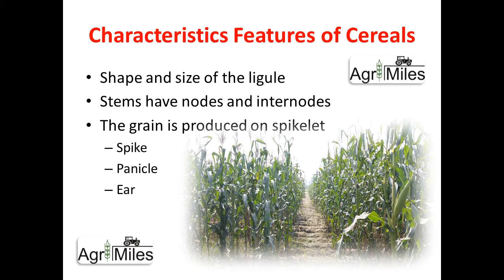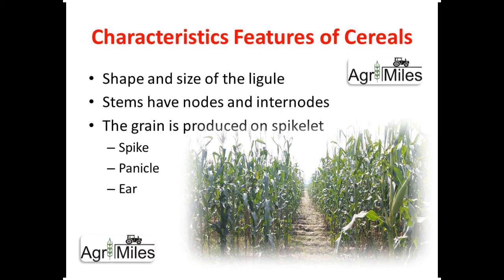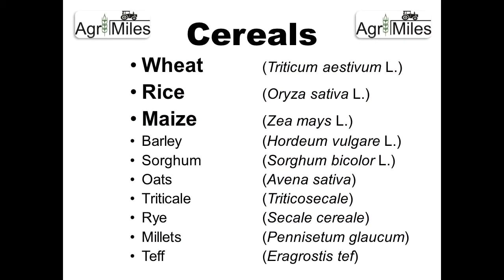These specialized structures may be called the spike, panicle, or ear. The spike is the fruit structure of wheat, the panicle is for rice, and the ear is for maize. If we list the members of the grass family which are eaten for their starchy seeds, they are listed here.